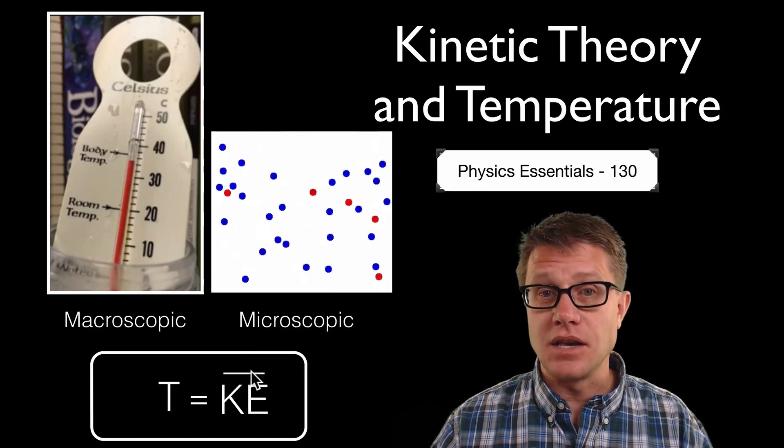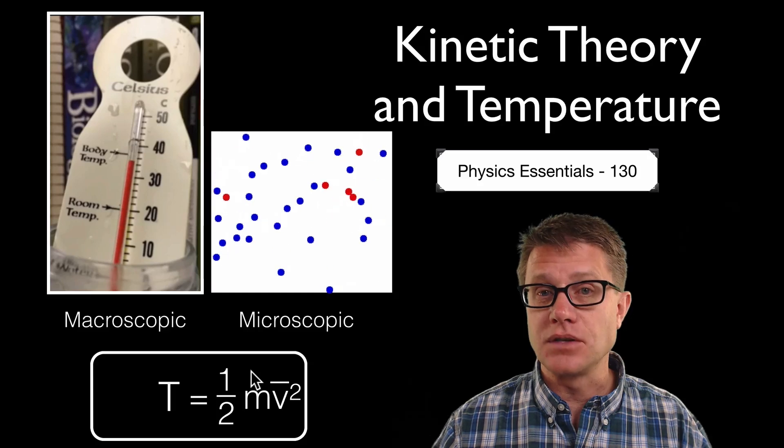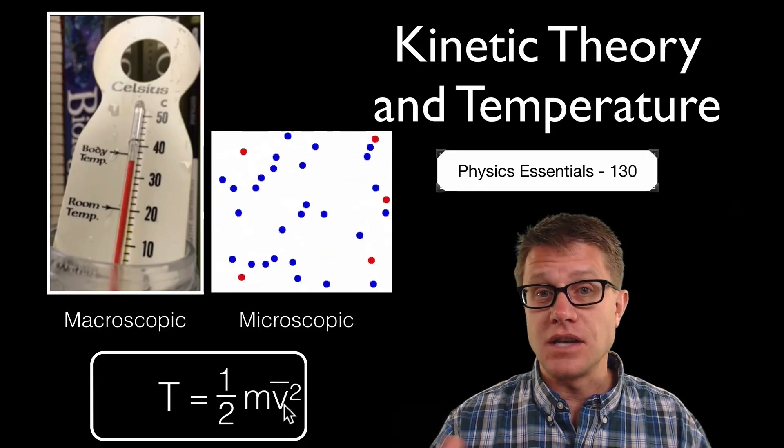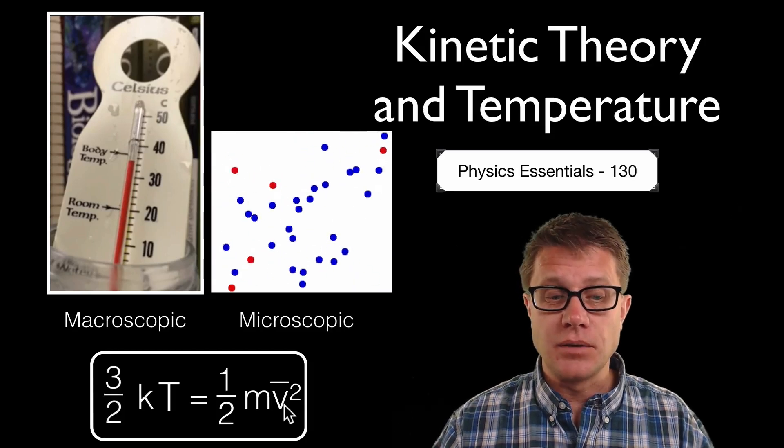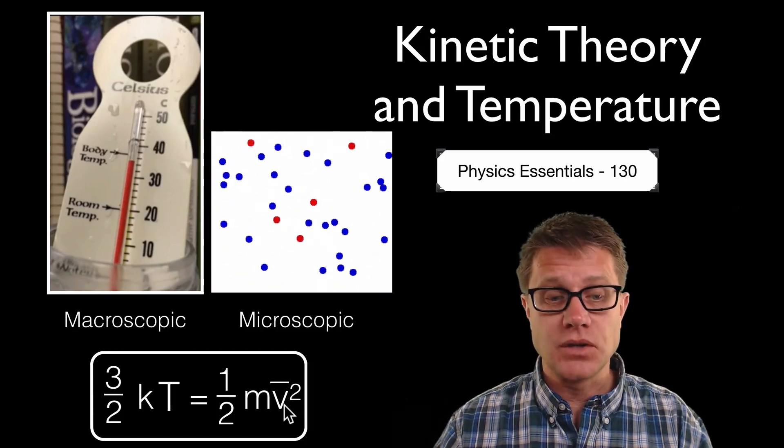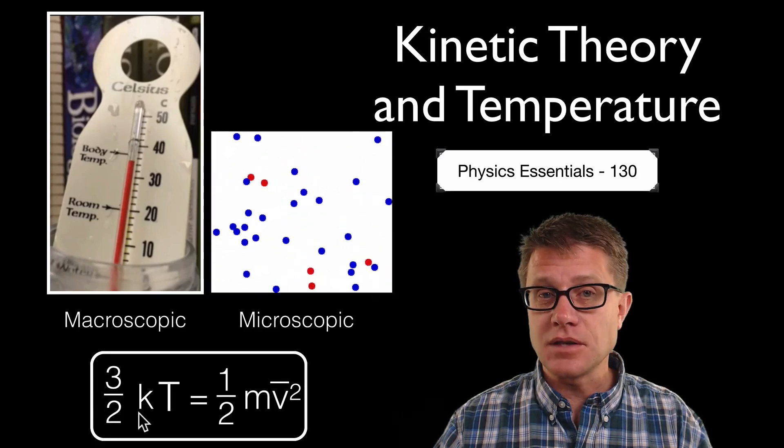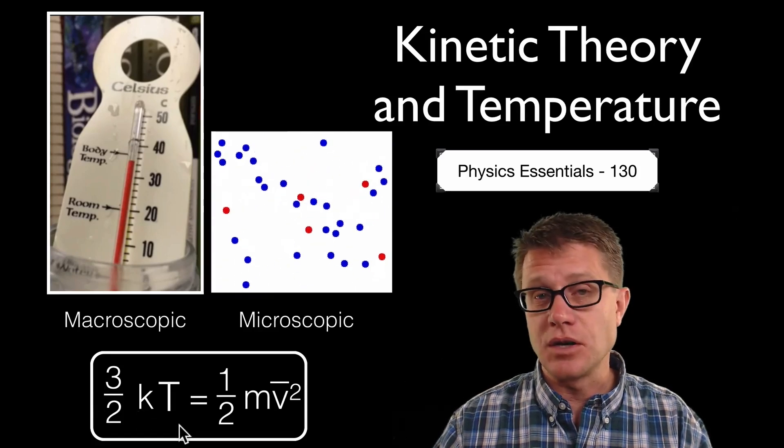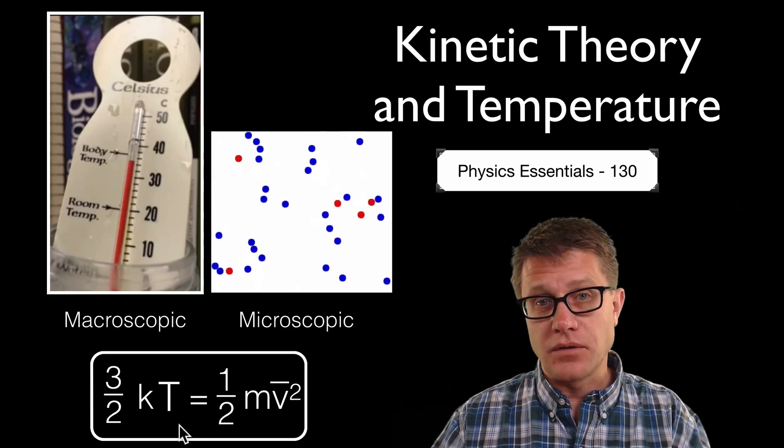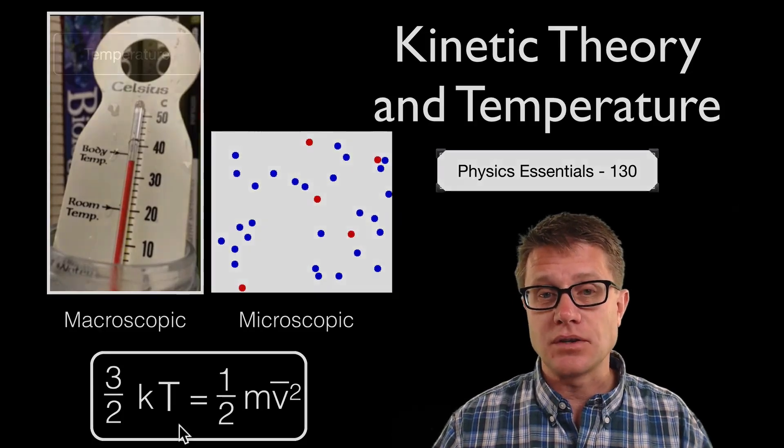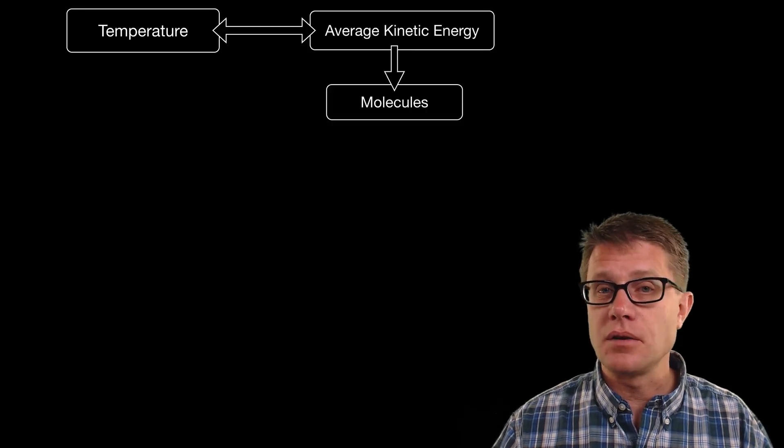This bar on the top means that it is the average. So we could put in our formula for kinetic energy, 1/2 mv². Now this velocity is the average velocity of the molecules. We call that the root mean square. And then on the left side we have to put in a constant, so that is the Boltzmann's constant. So 3/2 Boltzmann's constant times temperature, this has to be measured in Kelvin, is equal to 1/2 mv². This allows us to move from the microscopic world to the macroscopic world. Because temperature is the average kinetic energy of all of the molecules.